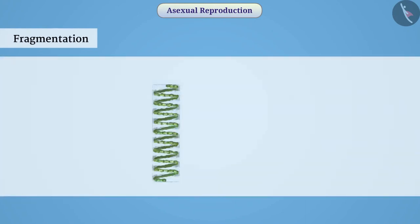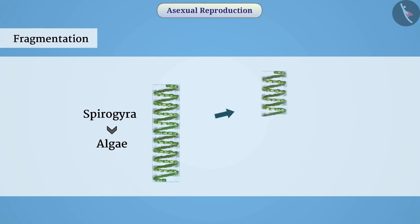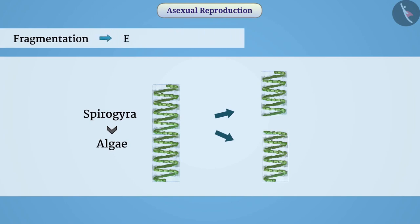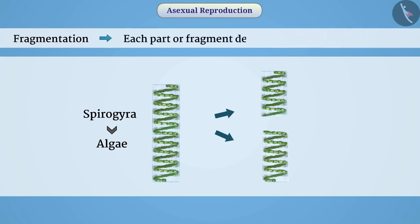Fragmentation: Some multicellular organisms, such as Spirogyra, which is an algae, have a simple body structure. Generally, such organisms are just a group of different cells. When they are fully grown, they break into small pieces. Each part or fragment develops into a new organism. This method of reproduction is called fragmentation.